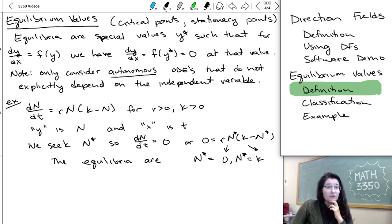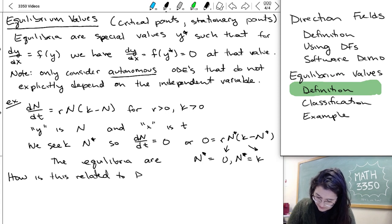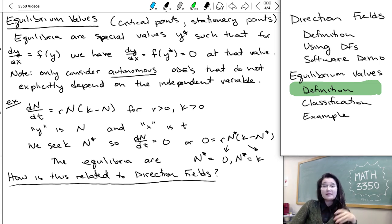So in that little short example above, and we'll do a longer example later, but we showed what an equilibrium value is and how we find it. And something that you might be wondering is how is this thing related to direction fields? Like why did we cover these two things in the same section?